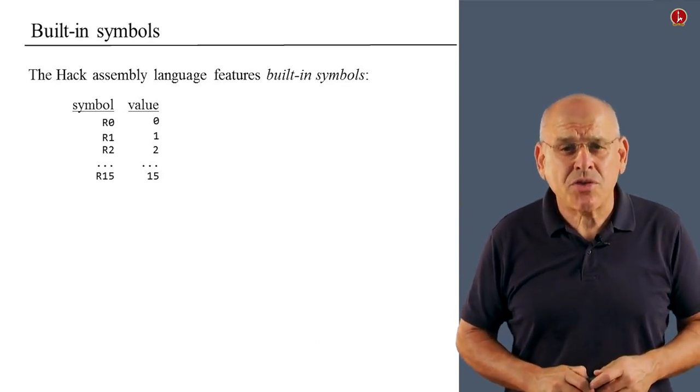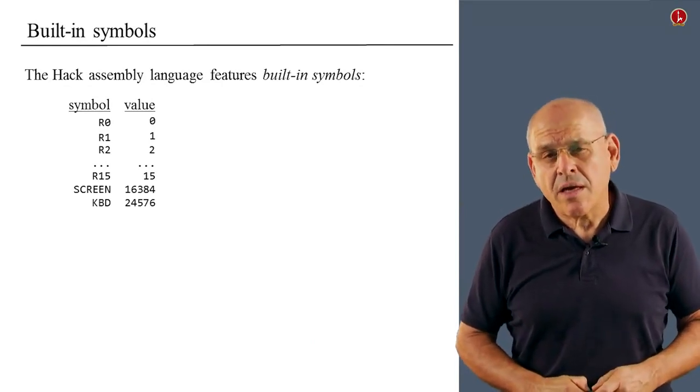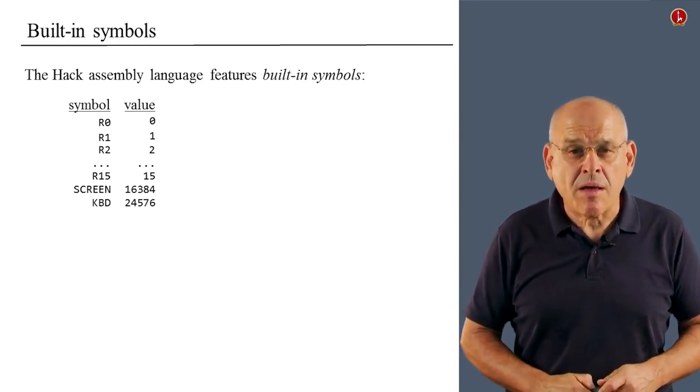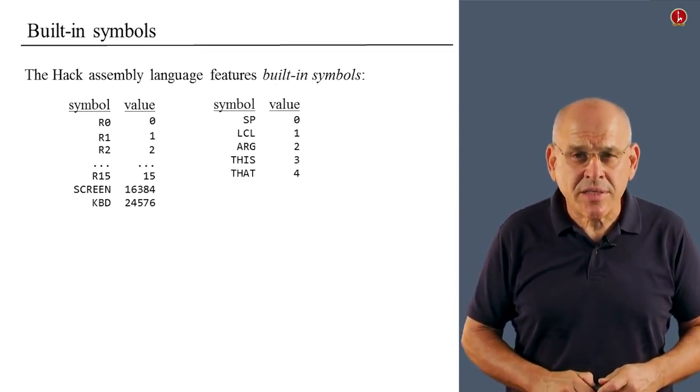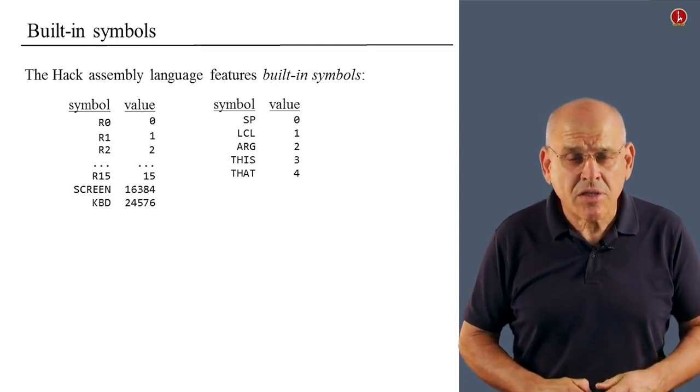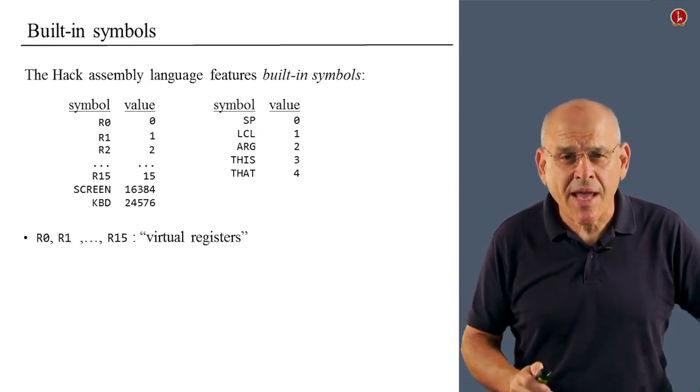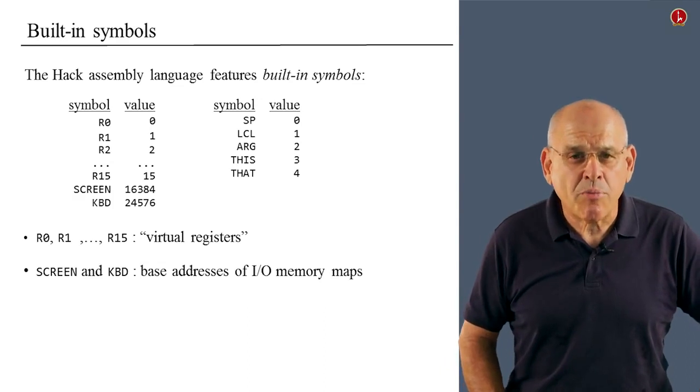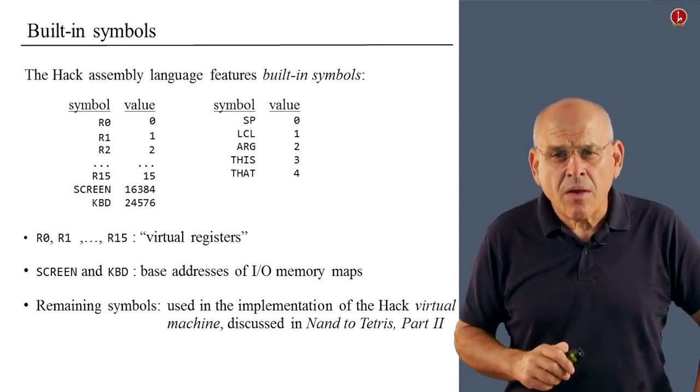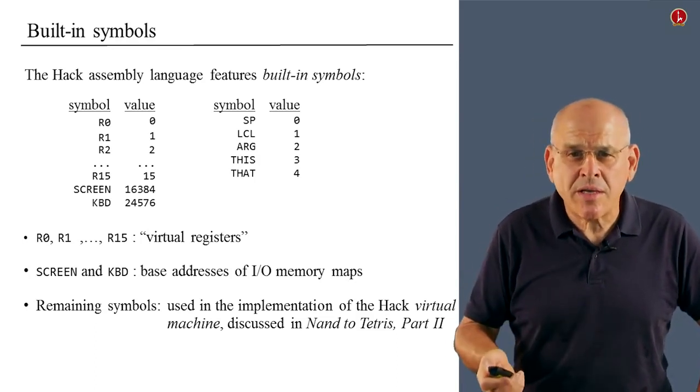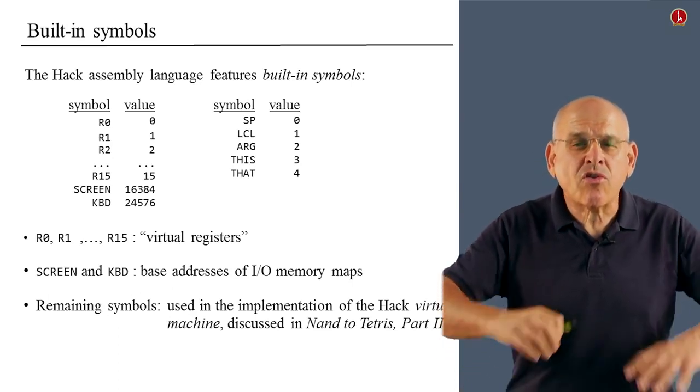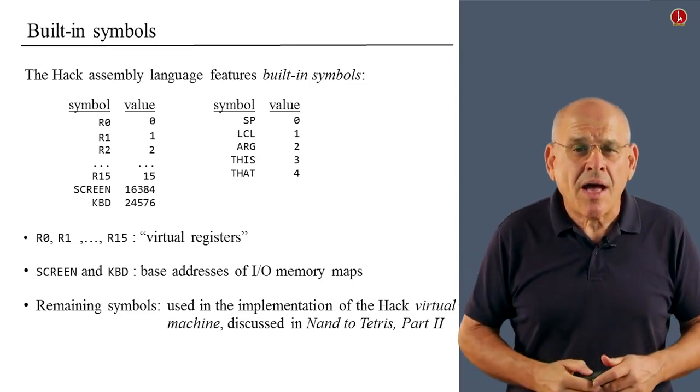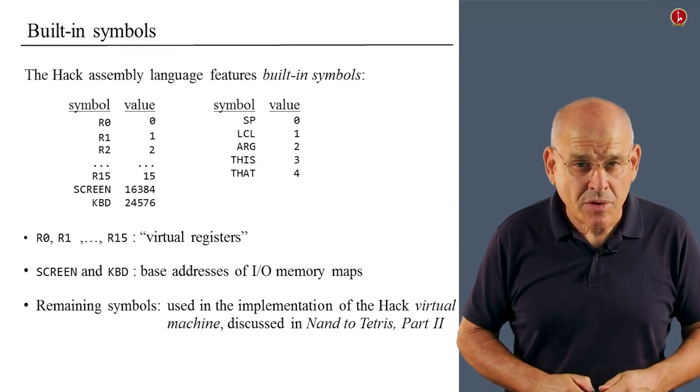What other symbols do you have in the language? Well, we also have screen and keyboard, which we discussed previously in one of the units. They stand for the base addresses of the screen and the keyboard memory maps. And we also have a set of six additional symbols that we don't really use in this course. So, let me wrap up the built-in or predefined symbols in the Hack language. We have 16 virtual registers. We have two symbols that stand for base addresses of input-output maps. And we have a set of six symbols, which are used by people who want to write virtual machines and compilers for high-level languages that will operate on top of the Hack platform. Now, this is something that we actually do in the second part of this course, called NAND to Tetris part two. But we won't use these six registers in the present course.